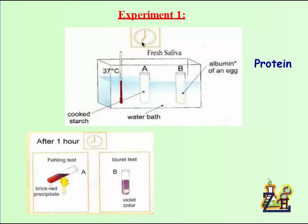Now after one hour as we see here in the clock, we did two food tests. The first food test is for tube A which is Fehling test, and as it shows it gave us a brick red precipitate which means that in this tube there is sugar. And we know this result already because we already know that starch in the presence of saliva is transformed into sugar.